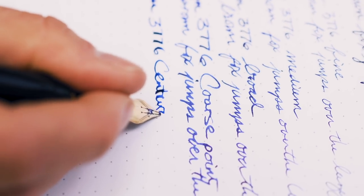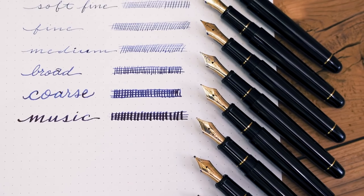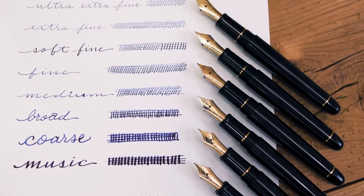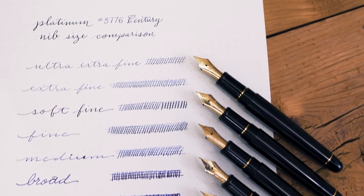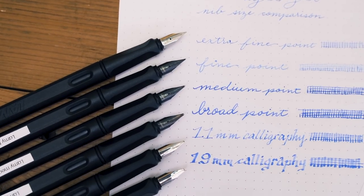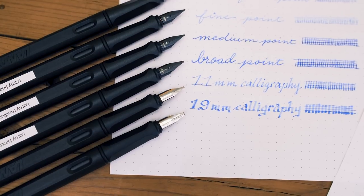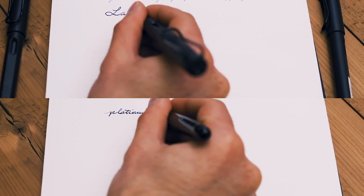Compared with Western nibs, the Platinum nibs from Japan run about a size thinner. Here we stack the Platinum nib range against the Lamy Safari stainless steel nibs to illustrate the differences. So if you prefer a Lamy Safari in a medium point, you might want to opt for the Platinum Broad nib.